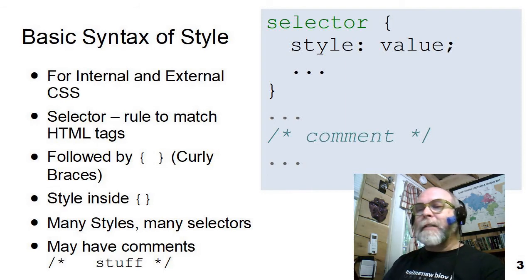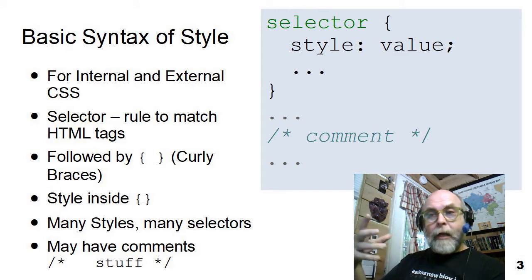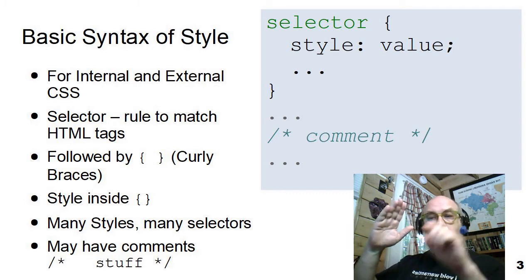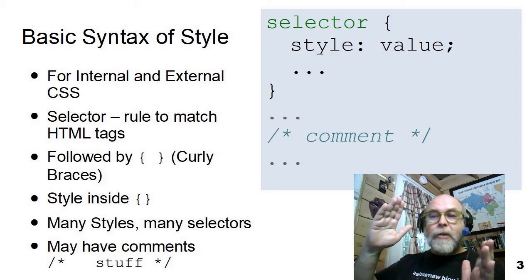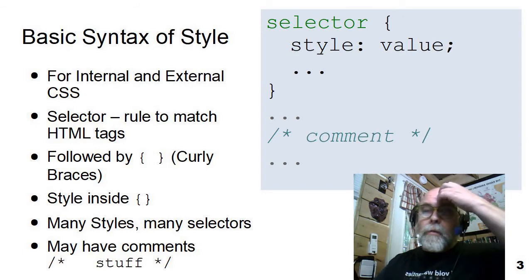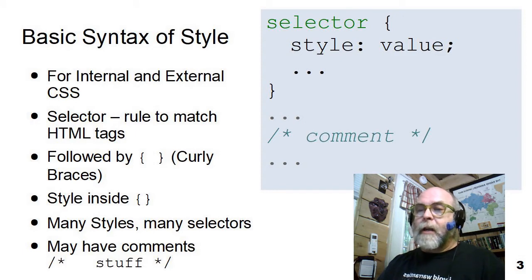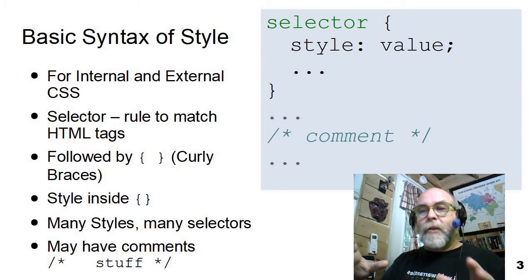A style sheet can include comments, which are things that the web browser ignores but are meaningful to humans. A comment statement starts with a slash-star, and whatever is in there — even if it's multiple lines long — ends with star-slash. It can even contain CSS between the slash-star and the star-slash, and the web browser will ignore it. A comment is a good place to put a page title, a description, modification dates, contact information, and all of that kind of stuff. That's the general basic syntax of a CSS style sheet.